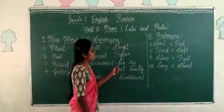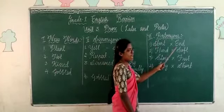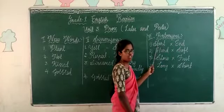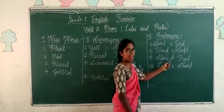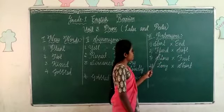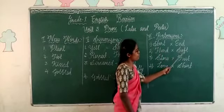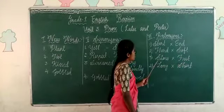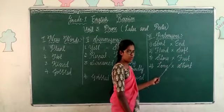Then antonyms. Start — end. S-T-A-R-T. Start. E-N-D. End. Hard — soft. H-A-R-D. Hard. Soft. S-O-F-T. Soft. Slow. S-L-O-W. Slow.